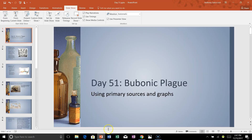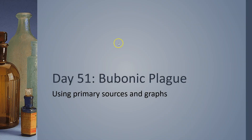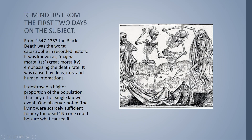For those who struggled with the reading, I took the liberty of showing a couple pictures of the Bubonic Plague and reminders from the first two days. In a six-year span, the Black Death was the worst catastrophe in recorded history to that point, called the Great Mortality. It was caused by fleas getting infected blood of a rat and jumping on a person, and as human interactions increased, more people got the plague. It destroyed a higher proportion of the population than any other single known event up to that point.